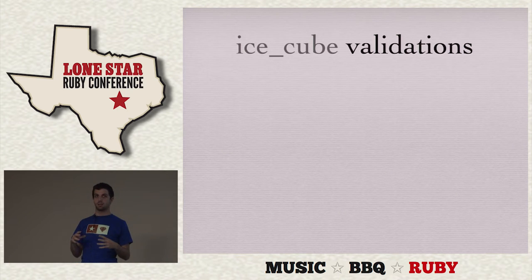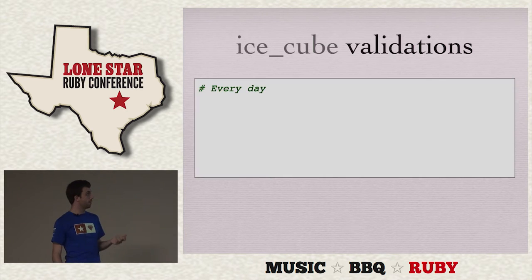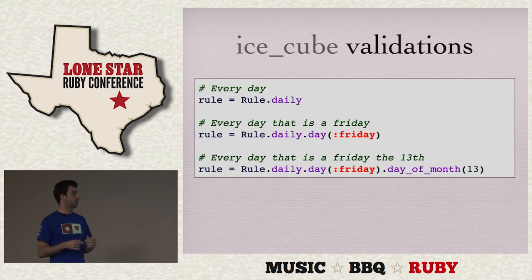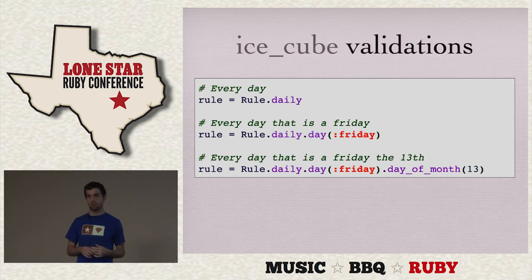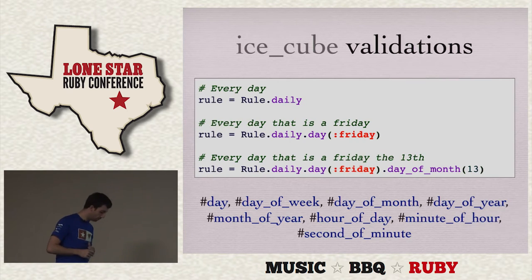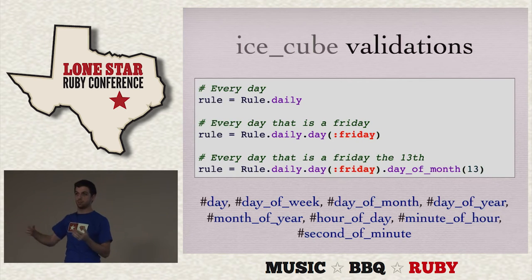But that's not really interesting, because all you can do is weekly, daily, or yearly events that start on the date you want. So then enter validations. Something like every day can become more complicated by just saying every day when the day is Friday. And you can chain them together — it's every day where the day is Friday and the day of the month is 13. Multiple validations on the same rule form an AND relationship, and you can have as many chained onto the rule as you want. Day is for an individual day of the week. Day_of_week sounds similar, but it's actually like this day of this week in the month — so the first Friday or the second to last Tuesday.